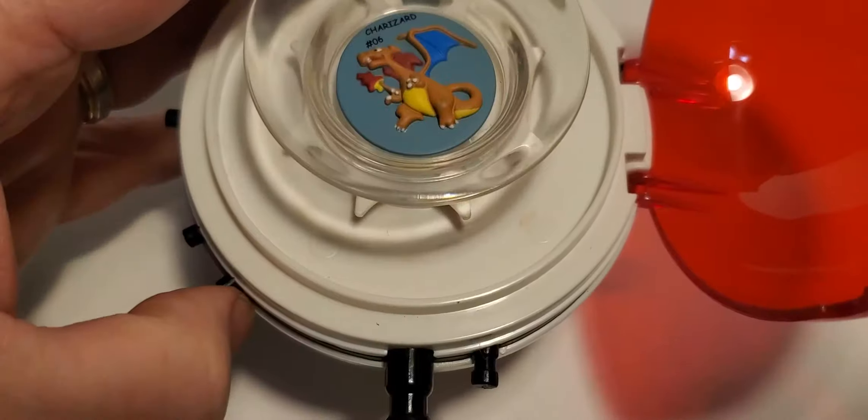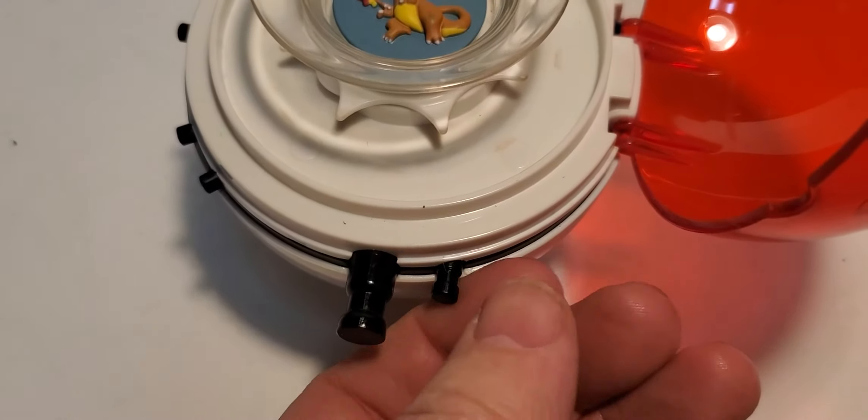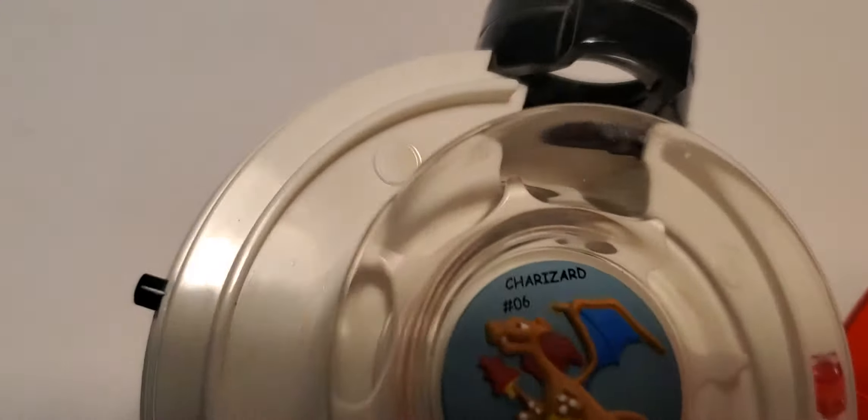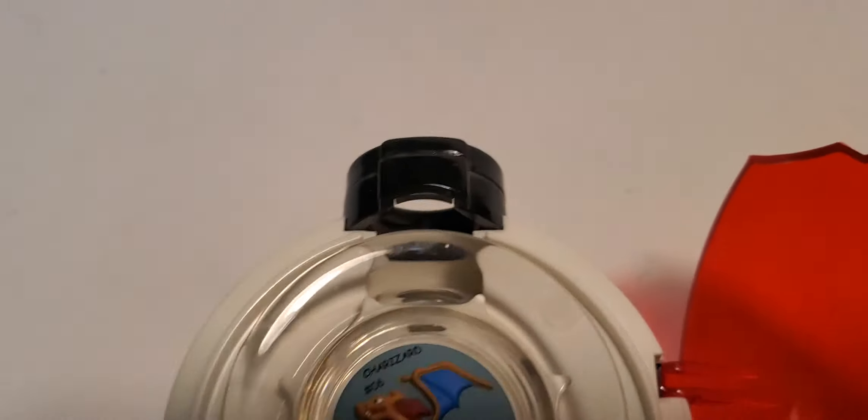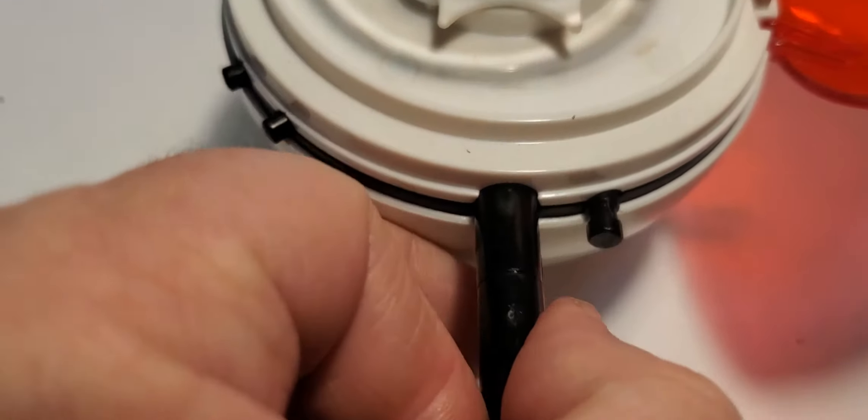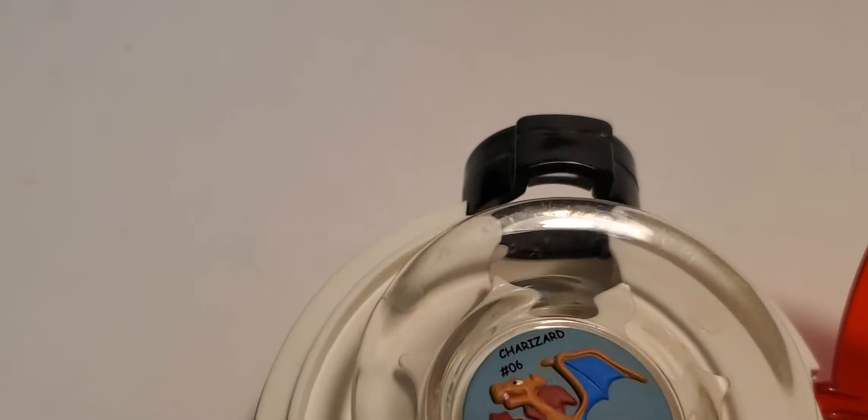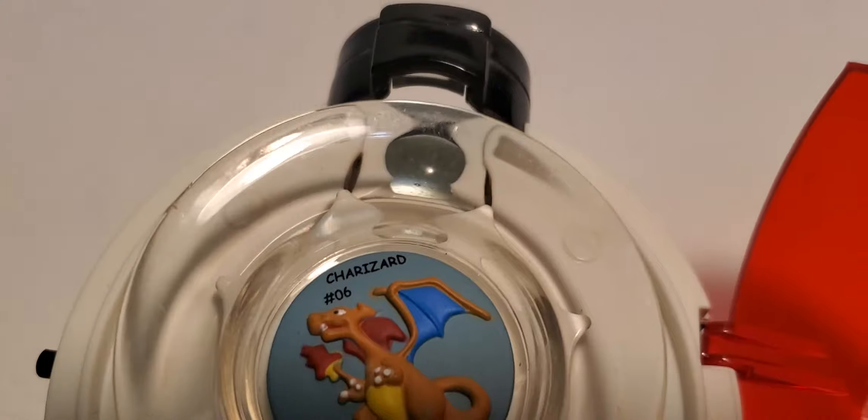And then this lever right here pulls this down to set the marble to drop the marble into place and then this lever here you pull back on it and release it and it shoots the marble out of the hole and shoots it forward and that's basically how it works.